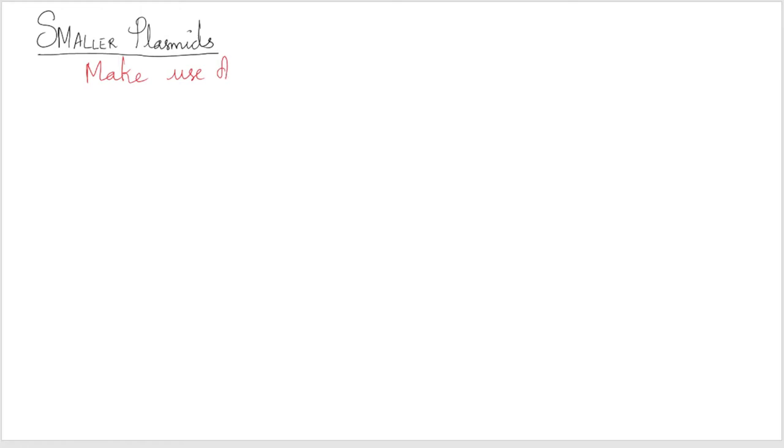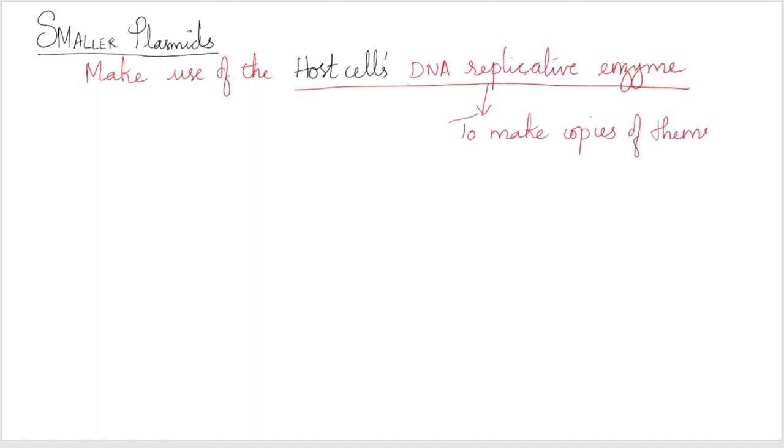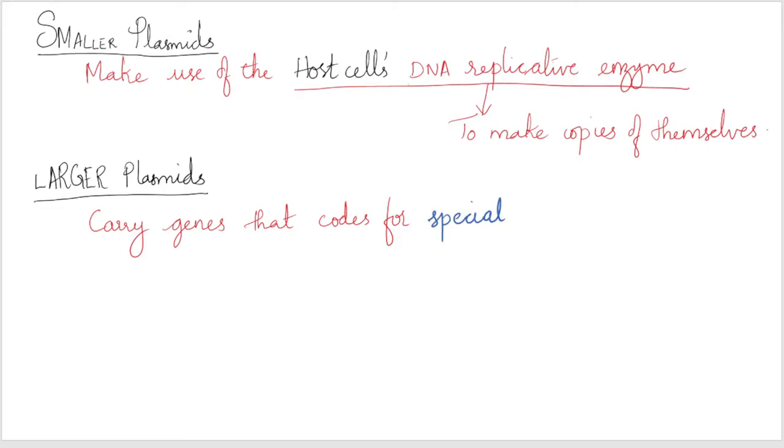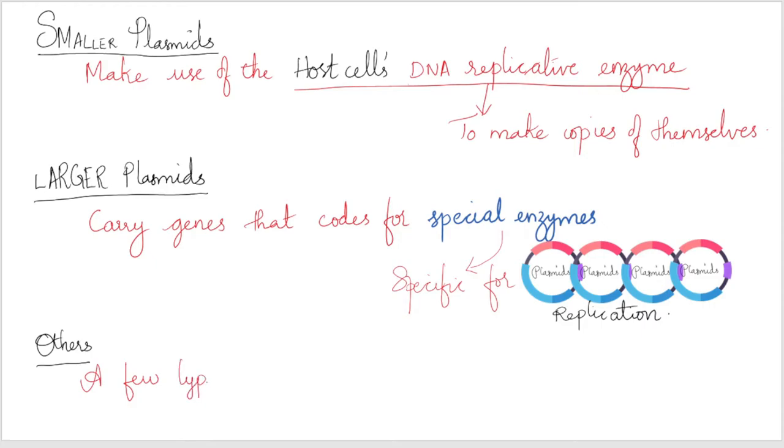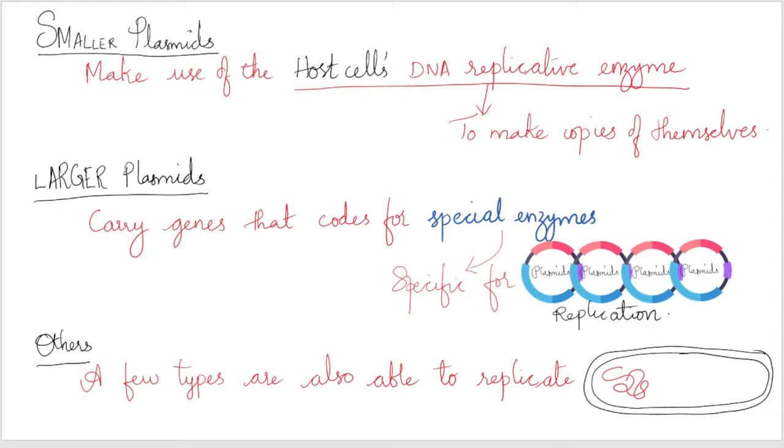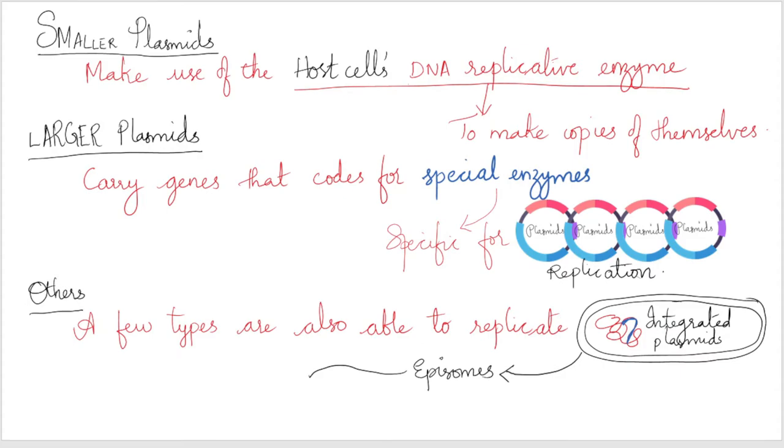The smaller plasmids make use of the host cell's own DNA replicative enzymes in order to make copies of themselves, whereas some of the larger ones carry genes that code for special enzymes that are specific for plasmid replication. A few types of plasmids are also able to replicate by inserting themselves into the bacterial chromosome. These integrative plasmids or episomes may be stably maintained in this form through numerous cell divisions, but always at some stage exist as independent elements.